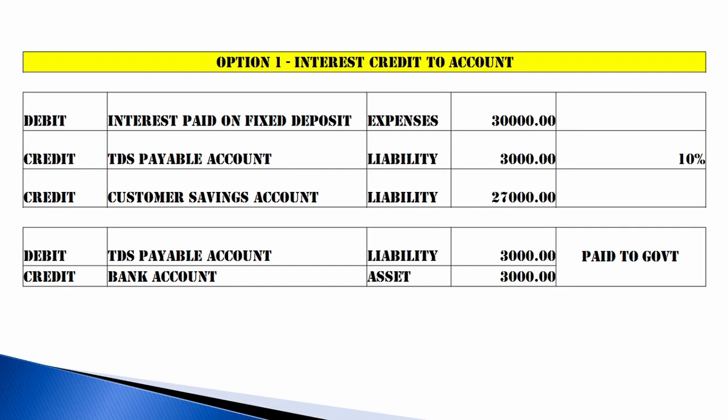For Option 1, interest is calculated quarterly. In this example, 30,000 rupees is the quarterly interest. Assuming 10 percent TDS, I will book 30,000 as an expense, deduct 3,000 rupees and keep it in a TDS payable account, and credit the remaining 27,000 to the customer account.